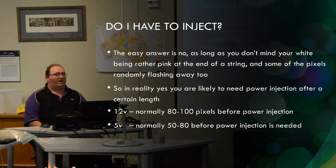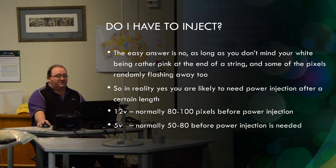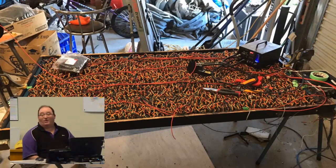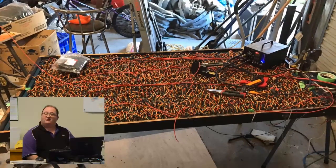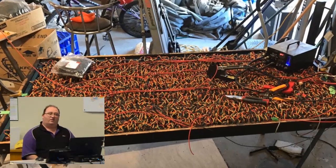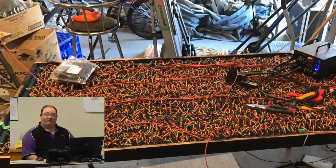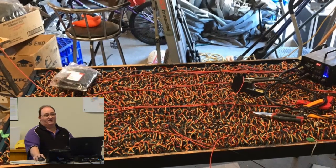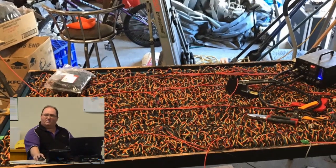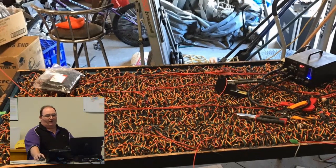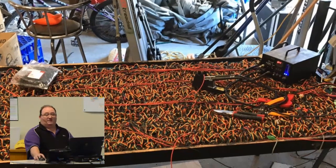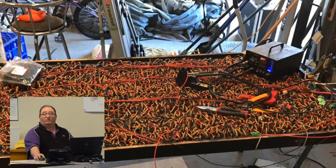12 volts, you can get away 80 to 100 pixels, sometimes more, before you've got to inject. 5 volts, 50 to 80. That's my basic setup - that is 2080 pixels with power injection, all 5 volt power injection absolutely everywhere. There's about 15 points from memory. That's my big LED sign. So 5 volts, you have to inject in a lot of places. I think that's being injected about every 30 or 40 pixels.